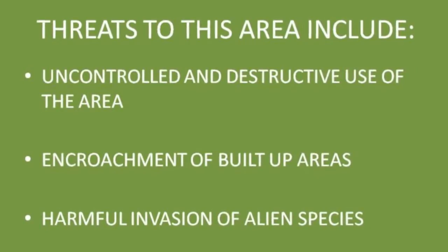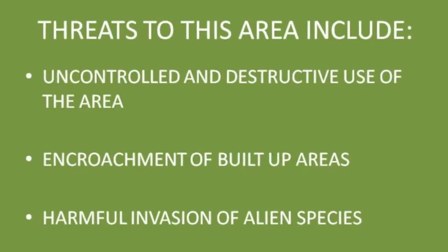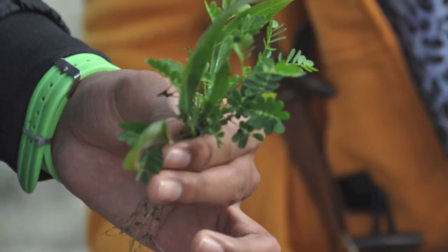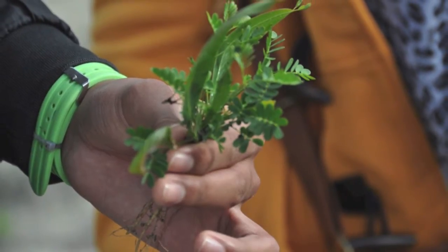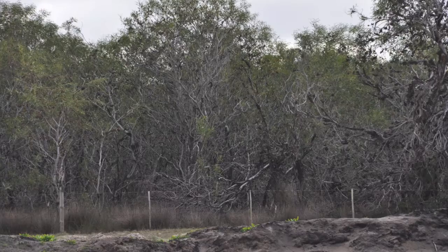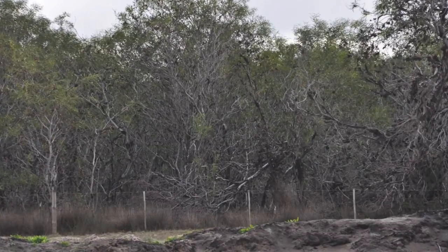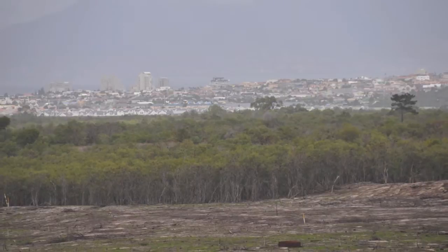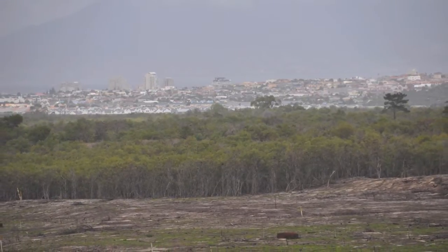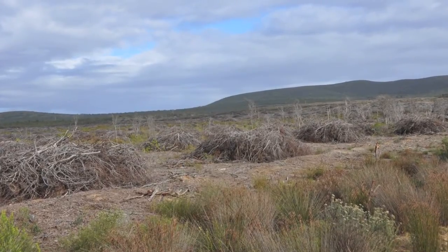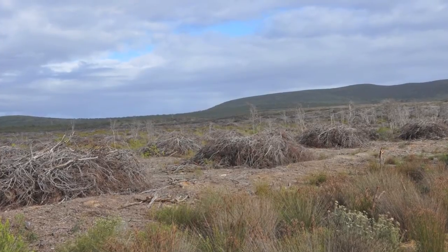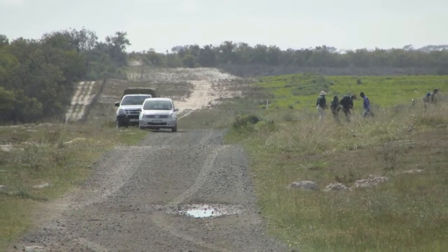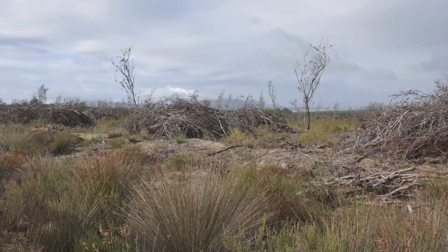Invasive alien species are one of the major threats to biodiversity at Blouberg. They consume large amounts of water — for example, the Port Jackson consumes a thousand litres of water on average per day. This poses a great threat to our water security. Alien plants which invade the area do not have natural predators, and therefore overpopulate, resulting in domination of indigenous species.